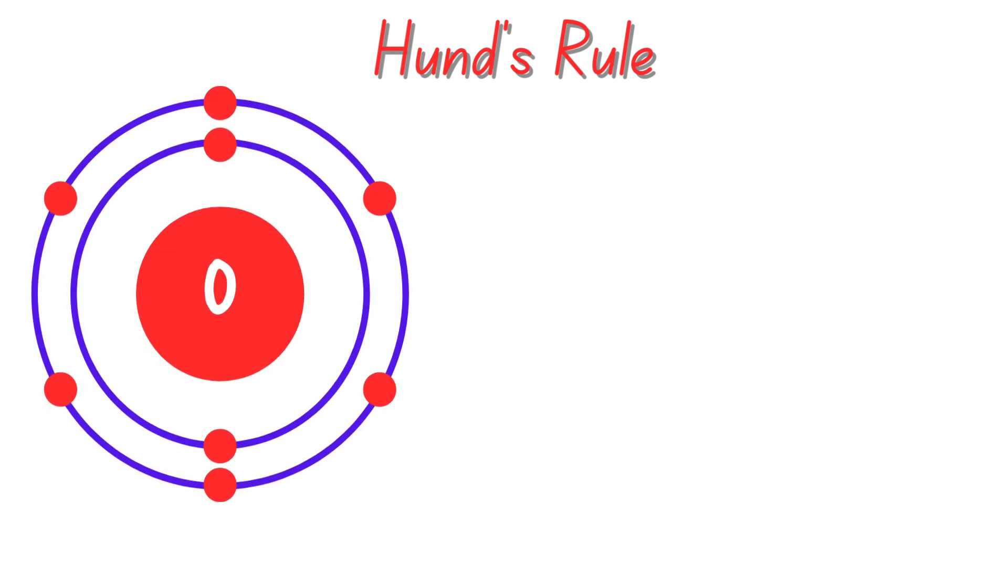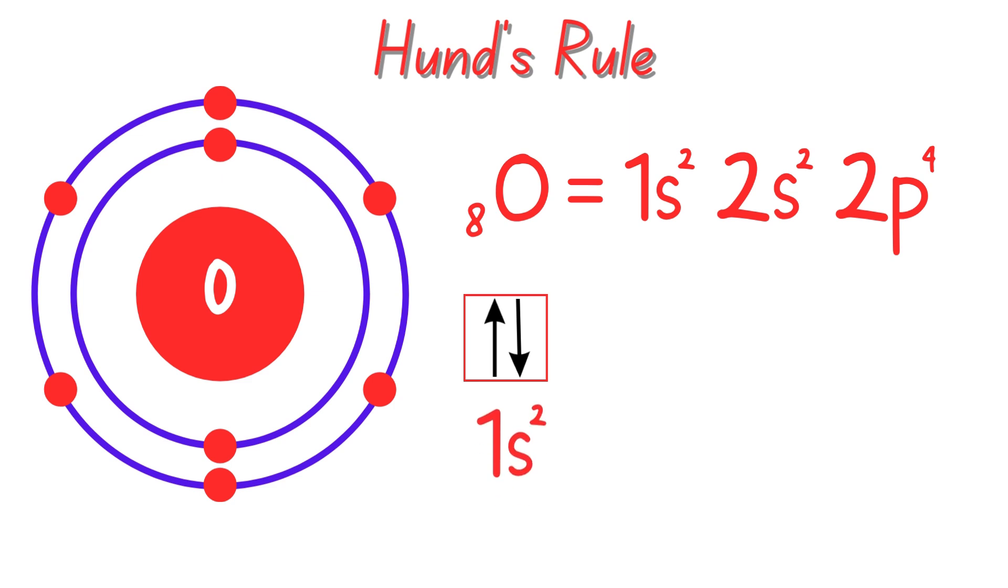Let's learn about Hund's rule. Hund's rule is a simple but powerful principle in quantum chemistry. It states, when electrons occupy orbitals of equal energy, they fill them singly first with parallel spins before pairing them up.